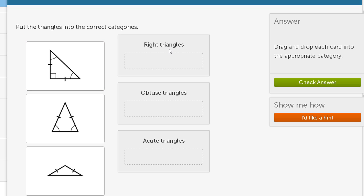Right triangles, so that means it has a 90 degree angle in it. Obtuse triangles, that means it has an angle larger than 90 degrees in it. Acute triangles, that means all three angles are less than 90 degrees.